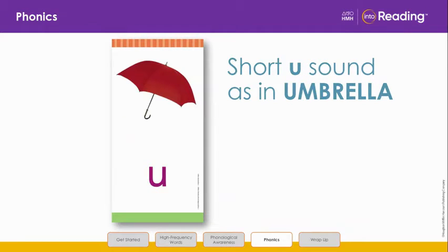Another vowel is U. Umbrella begins with a short U sound, UH. Say it with me: UH. The UH vowel sound can be anywhere in a word.